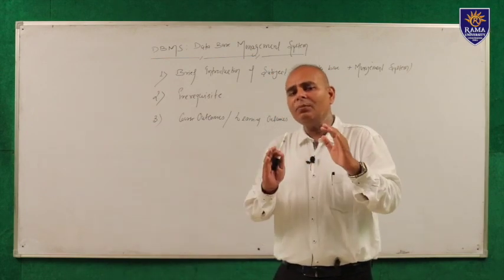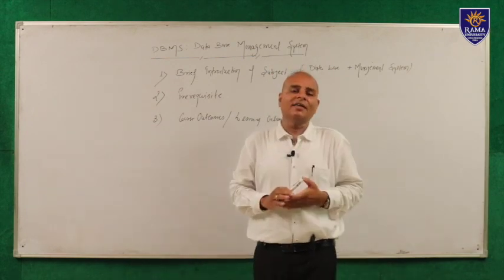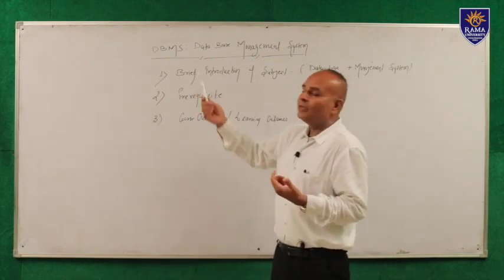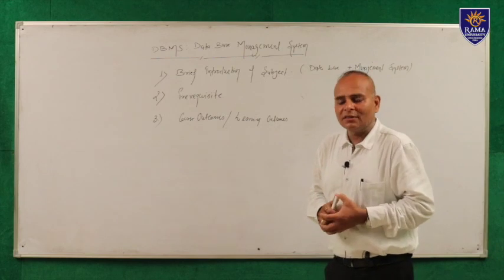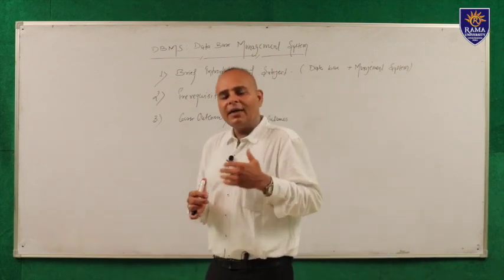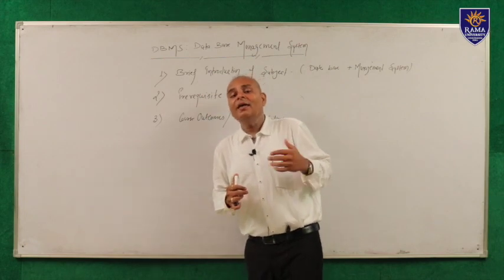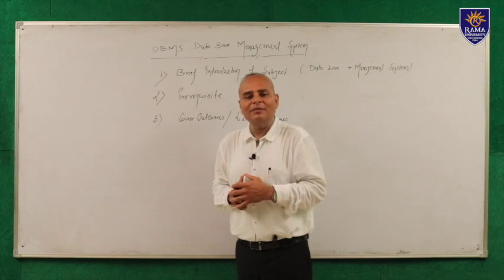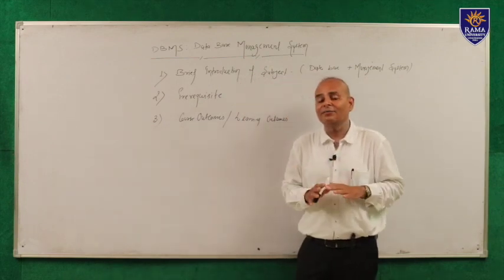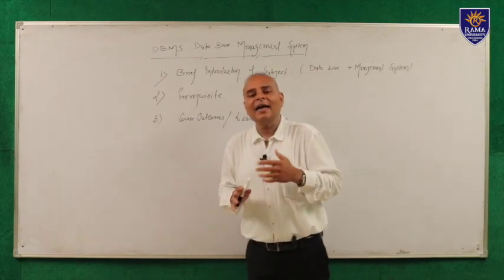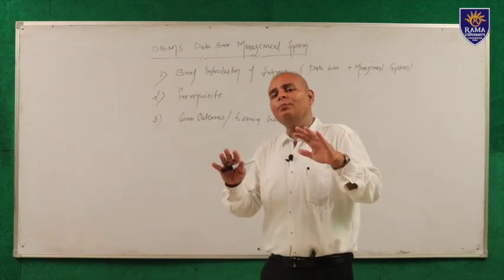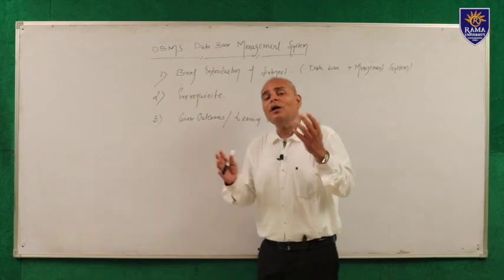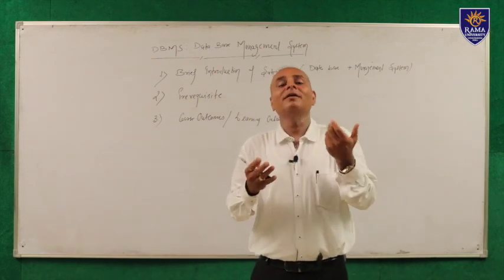You must understand there are more than four subjects designed around the term 'data' in computer science. First, DBMS — that is Database Management System. Second is Data Structures. Next is Data Mining. Then Data Warehousing. And the most important and advanced subject bombarding our daily life is Data Science and Data Analytics. You can easily realize the importance of data — more than five subjects are designed around this single term.